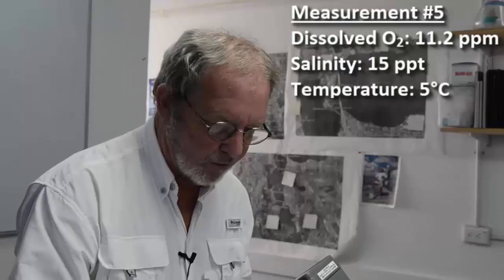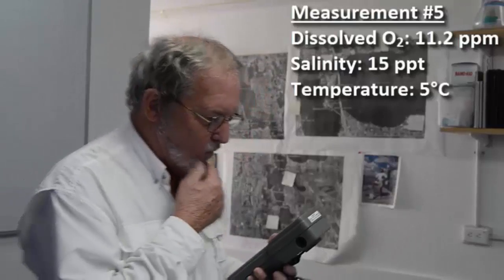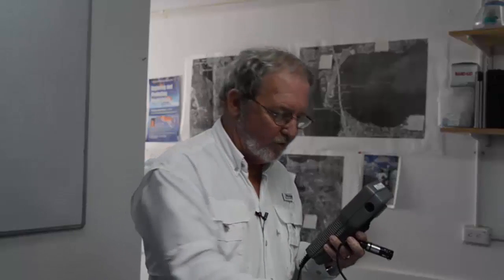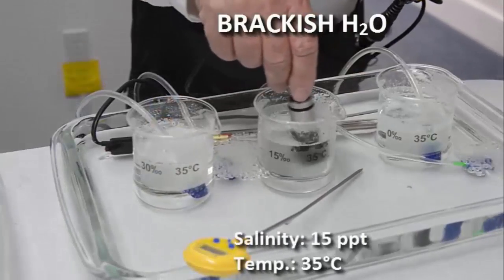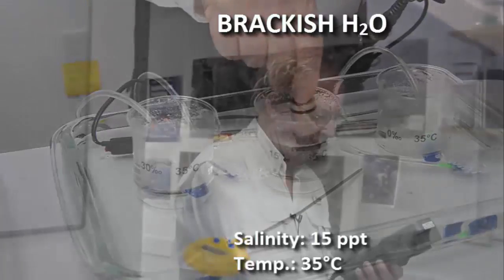Now for our last determination here we're going to look at again brackish water, 15 parts per thousand salinity, and in 35 degrees centigrade warm water. This would be our bath water. 5.7 parts per million dissolved oxygen.